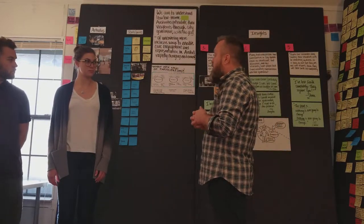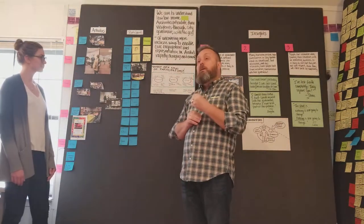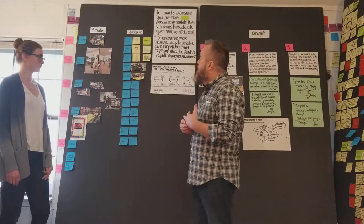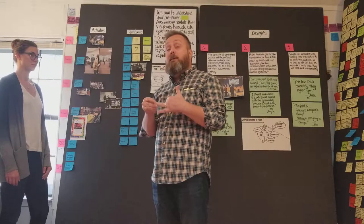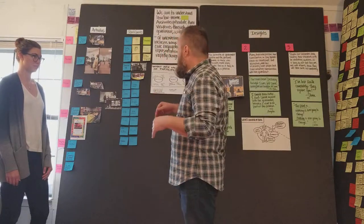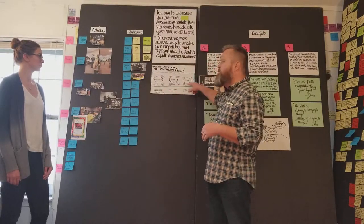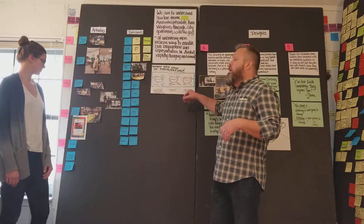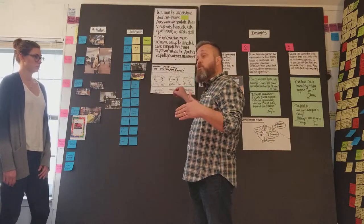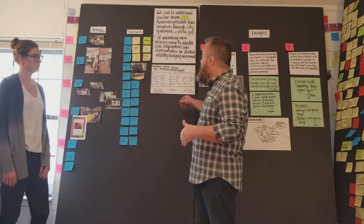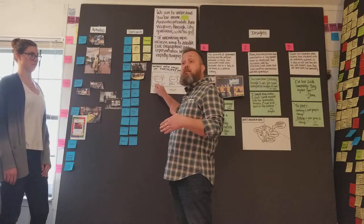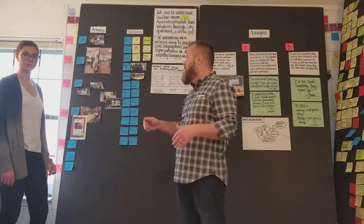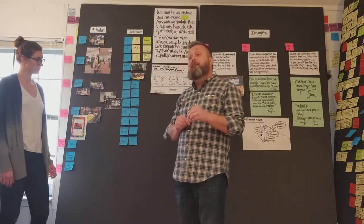In our research we used design research methods — setting out to empathize and understand the viewpoints of a variety of Austinites, talking with them and observing them in moments of civic engagement. We went to city council and observed people participating politically. We went and voted and talked with voters on election day as an example of electoral engagement. We also attended community Thanksgiving dinners, observed and participated as citizens, and talked with them about their experience — an example of community civic engagement.